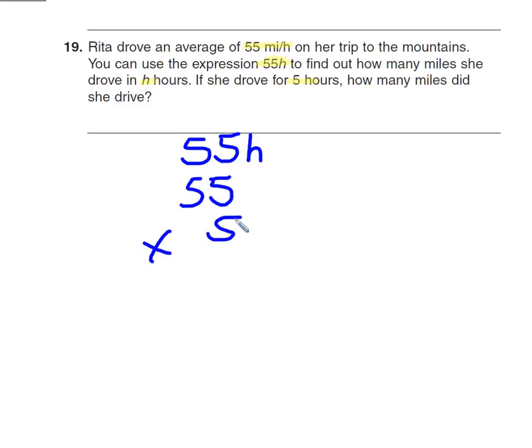Pretty lucky with this word problem that gave you the equation. 55h means 55 times h. H is 5. And you multiply this out and you should get 275. I did this one beforehand. I'll let you guys multiply that out. But just make sure you get 275. Check your math if you didn't.